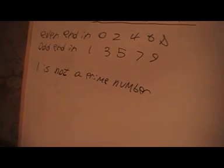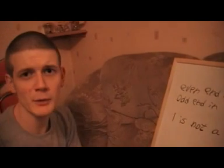Why is one not a prime number? Well, because a prime number can be divided by one and itself. But one can only be divided by one. So therefore, one isn't a prime number.